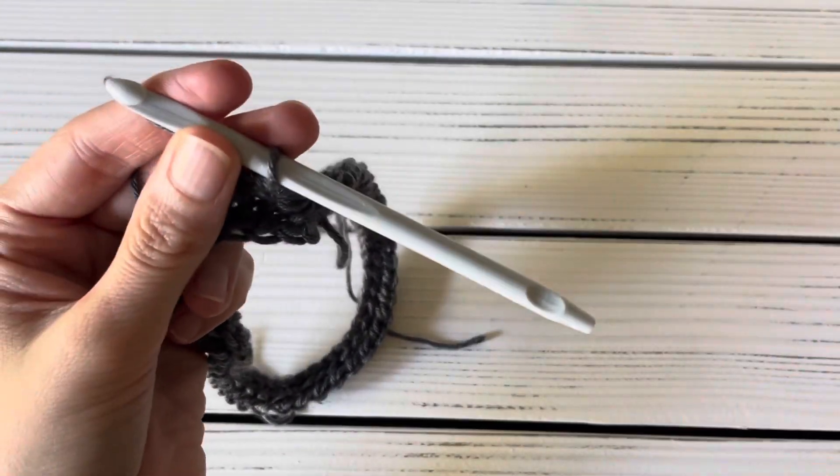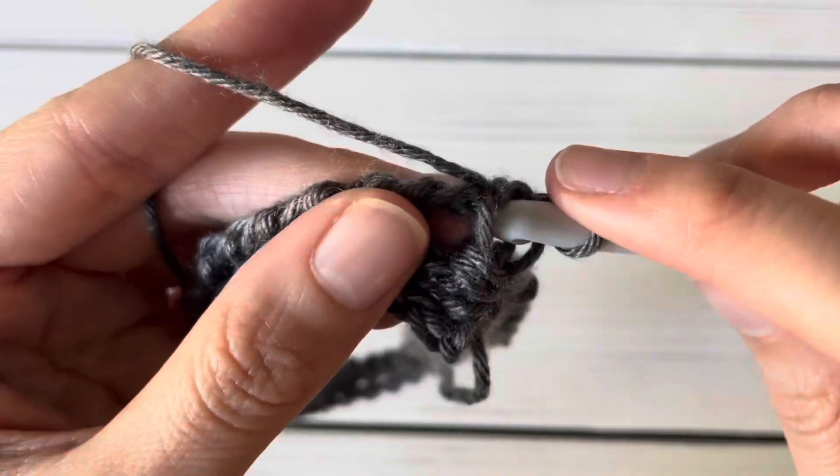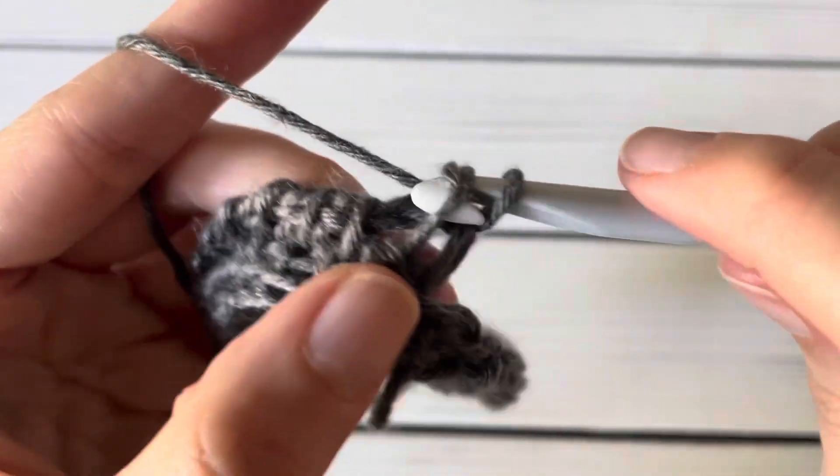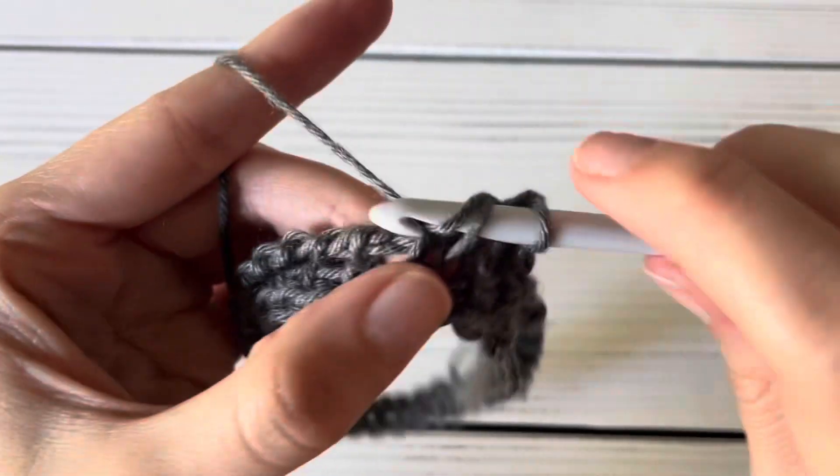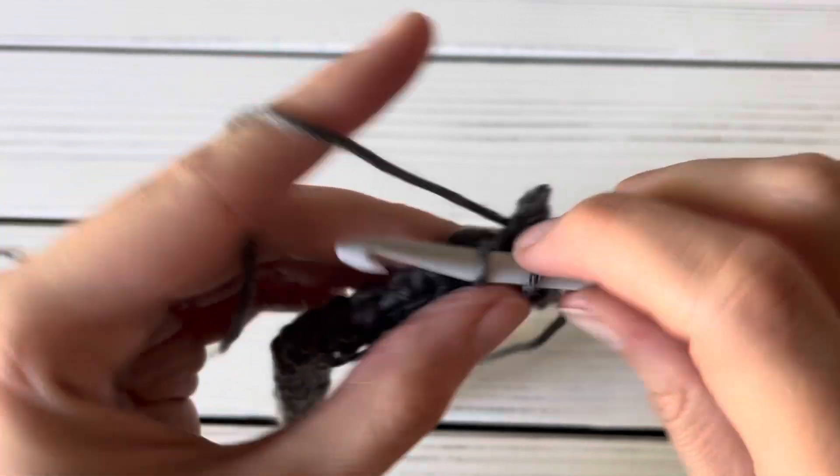Now I'm going to show you how to bind off. I'm just going to take my cable off to make it a little easier. Don't forget that first stitch there to work your slip stitch into. So slip stitch in each stitch all the way around.